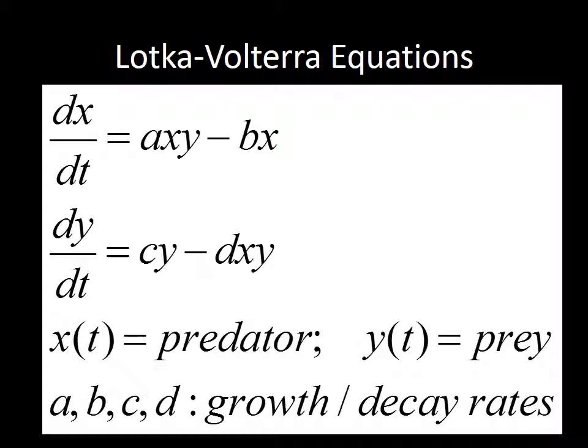The prey is also able to grow naturally, driven by coefficient C. The decay of the prey is not only due to natural causes but also due to the availability of the predator X — that's why in the prey equation the decay is driven by second-order dynamics. Those are essentially the core elements of the Lotka-Volterra equations.